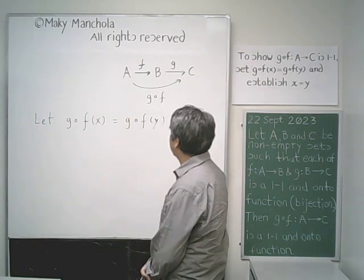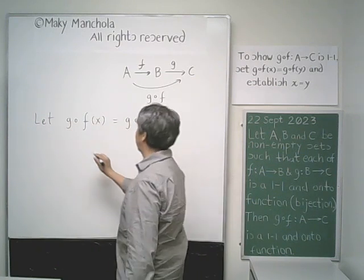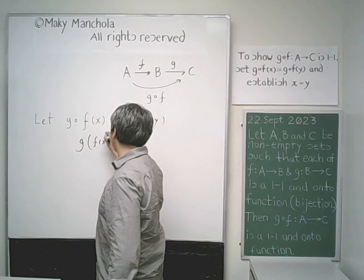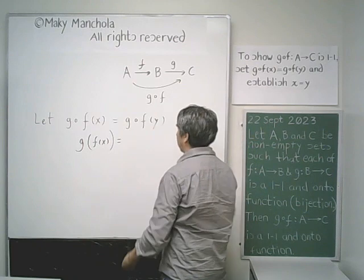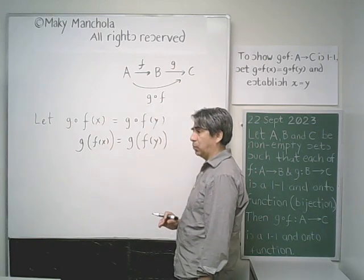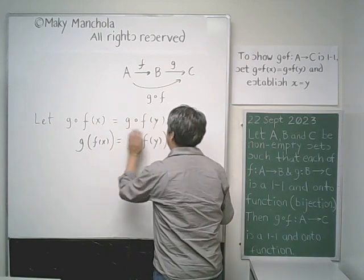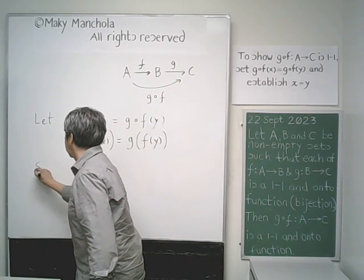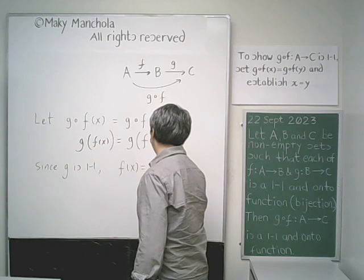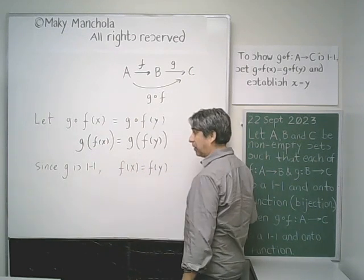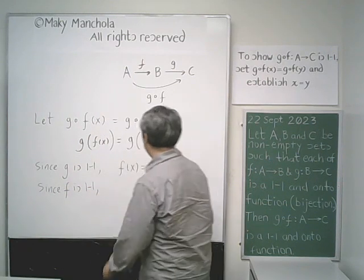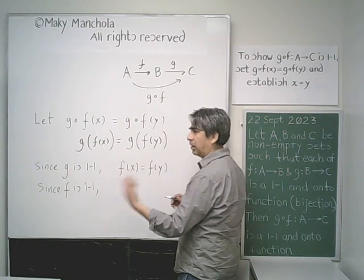So we start with that. The meaning of G composed with F of X is G evaluated at F of X, and similarly, G composed with F of Y means G evaluated at F of Y. Now, since G is 1-to-1, F of X must equal F of Y. But since F is also 1-to-1, when F of X equals F of Y, we conclude X equals Y.